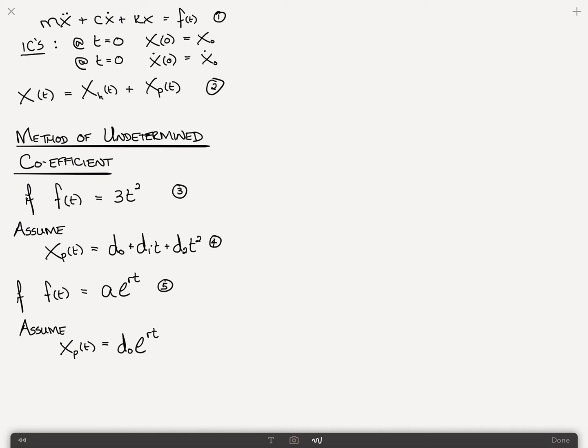In the event of this, you would assume x particular to be in the form of some unknown constant which we'll call d0 e to the rt. If I had on the right something else, like a1 e to the r1t and a2 e to the r2t, then I'd have to add that here. I'd have to have d0 e to the r1t plus d1 e to the r2t.